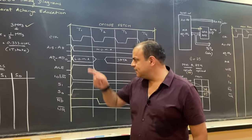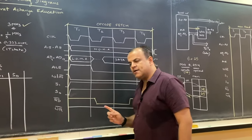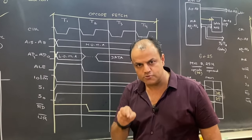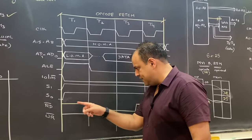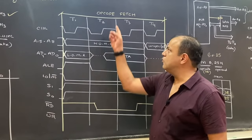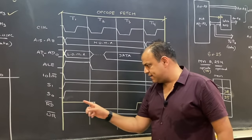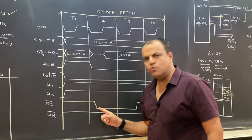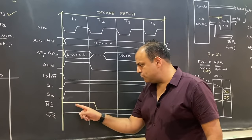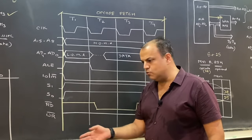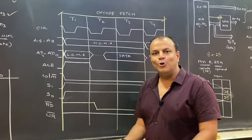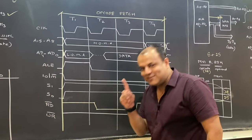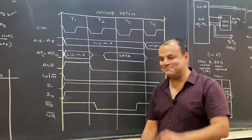सबसे important बात timing diagram का timing है — मजाक नहीं कर रहा हूं, seriously बोल रहा हूं। जैसे code fetch में read bar को low होना है तो यहां पे ही low होना है। बच्चे यहां पे low बना देते हैं फिर बोलते हैं sir marks क्यों नहीं दिया — low तो बना है न। Low बनाने के marks नहीं हैं; correct वक्त पे low बनाने के marks हैं।